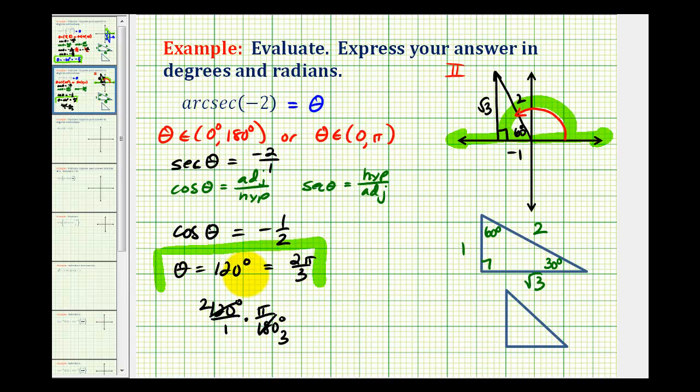As a last resort, we could use the calculator, but there's not going to be an arc secant or inverse secant button. So again, we'd have to make the connection that since cosine theta is equal to negative one-half, then inverse cosine, or arc cosine of negative one-half, would be equal to our angle theta.